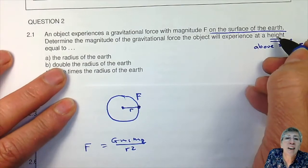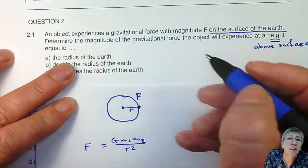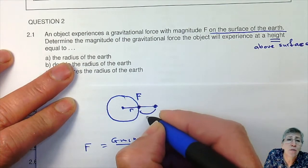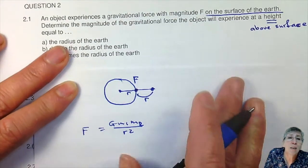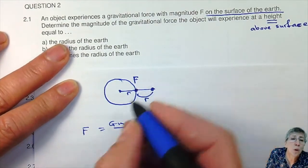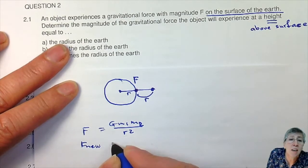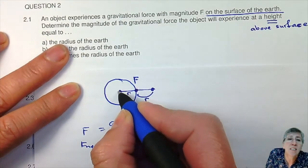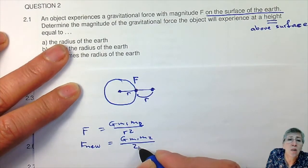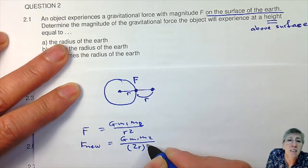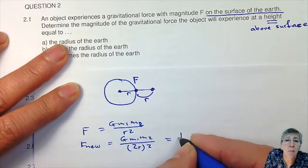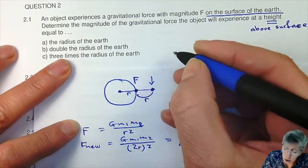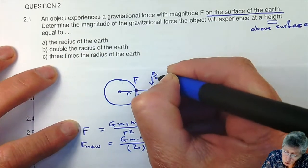If they tell you the object is at a height equal to the radius of the earth, that means it is R above the surface. But to work out the new force, the distance between the centers is now 2R — not R. So you end up with one quarter of the original force; over there it will experience F over 4.